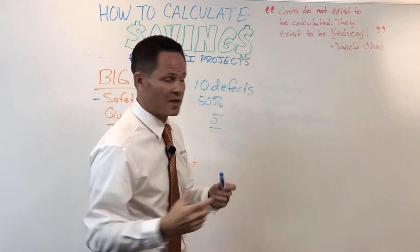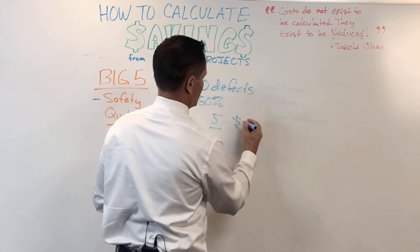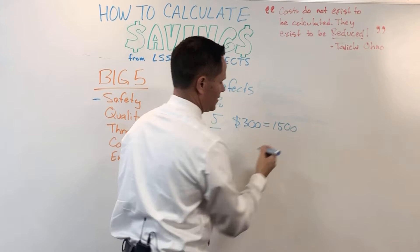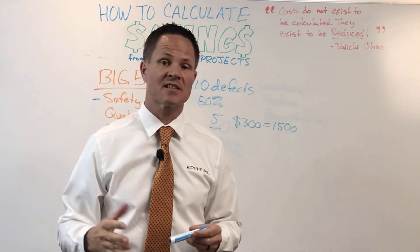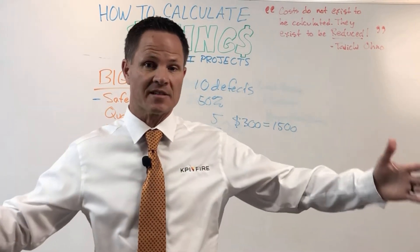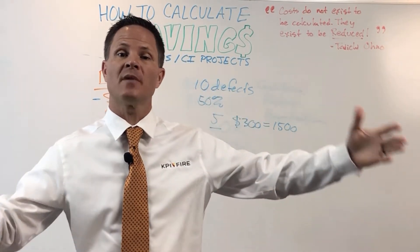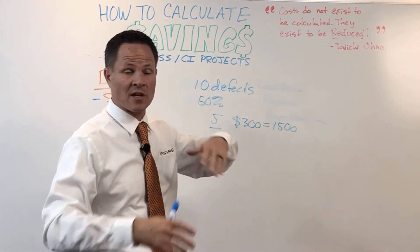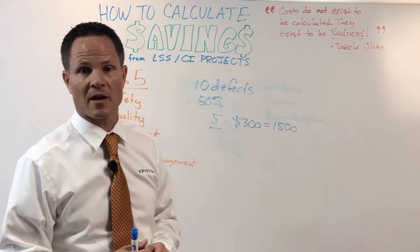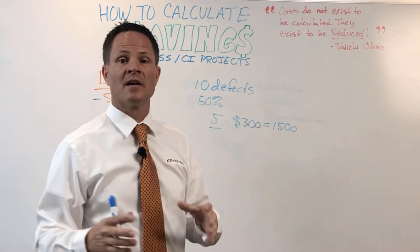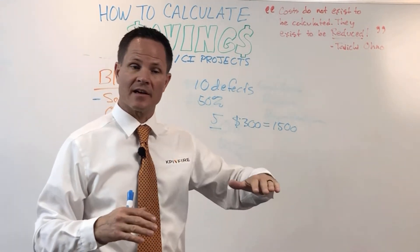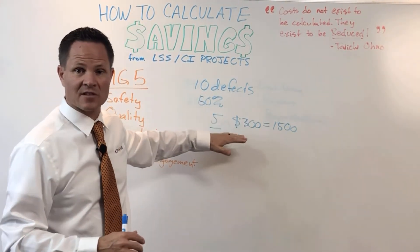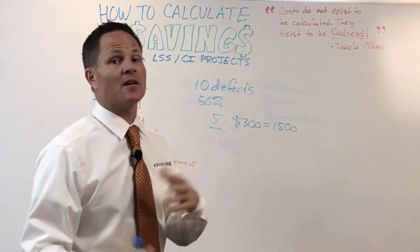If I'm making a widget worth $300, I can multiply that by five and get a $1,500 savings per day. With Lean Six Sigma projects, you're allowed to annualize that — so for the next 12 months you can count $1,500 per day times however many production days you have per year, roughly 250. After that, the five defects per day becomes the new baseline and you have to improve upon that.